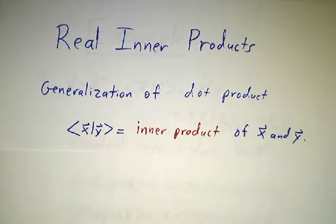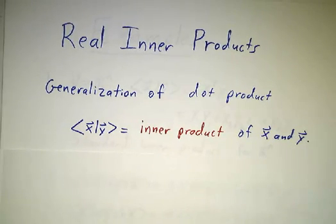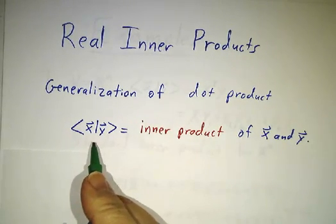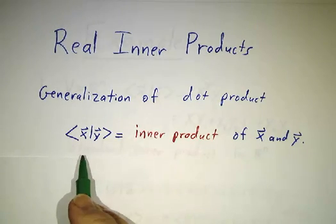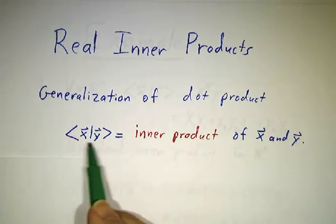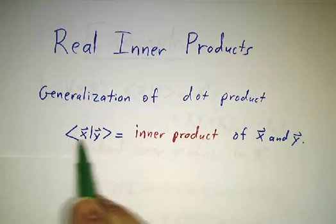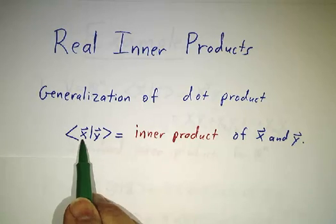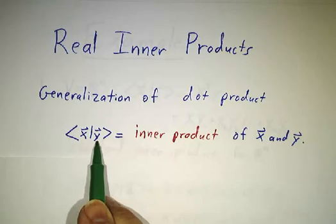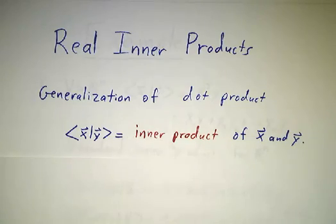So an inner product is going to be something that we do on a general vector space that behaves kind of like the dot product behaved in R³. We denote it by brackets. There are many different notations for inner products. We're going to use this bracket notation. So this is the inner product of the vector on the left side of the bar and the vector on the right side of the bar. The inner product of x and y.